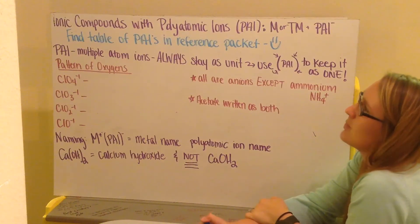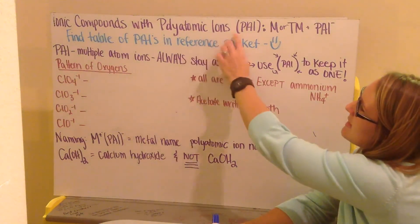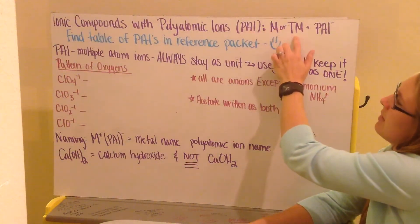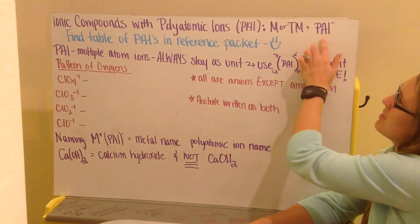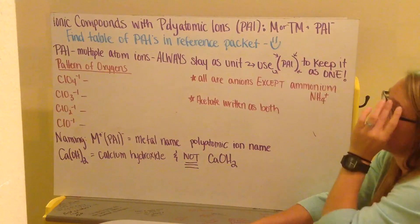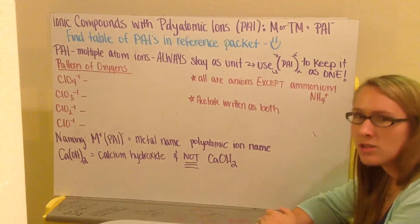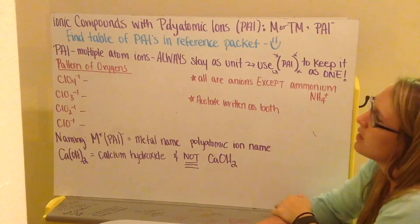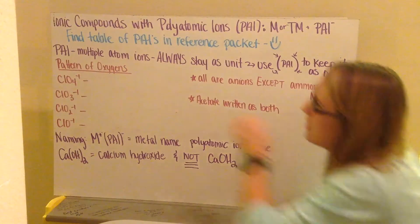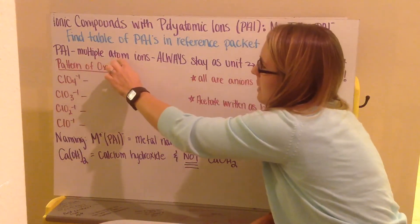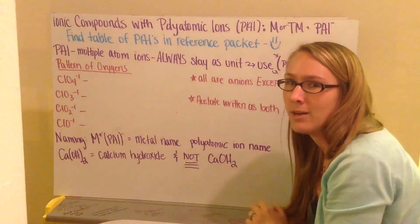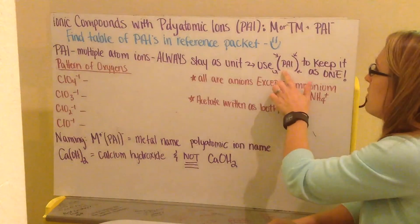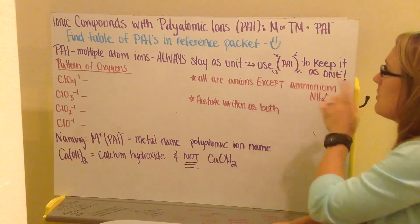Lastly, I have ionic compounds with polyatomic ions. We abbreviate polyatomic ions as PAI. This kind of compound is a metal or transition metal, and that's going to interact with an electrostatic force with our polyatomic ions. All polyatomic ions are negatively charged except for ammonium. Ammonium is NH4, has a positive 1 charge. PAI, or polyatomic ions, poly meaning multiple, atomic, atom, and ions saying that we have a group of atoms put together with an overall charge. They are always going to stay as a unit, so we must use parentheses around our polyatomic ion to keep it as one unit.